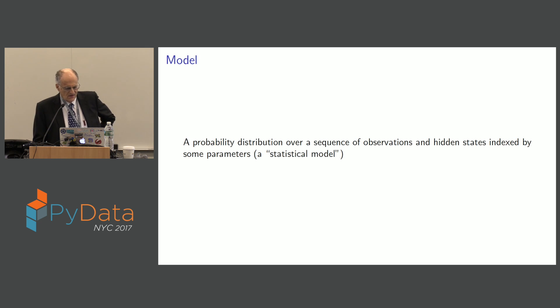So here's a model. Andrew Gelman uses the same. Bayesian uses the same. Probability distribution over sequence of observations, hidden states, indexed by some parameters. That's what I mean by a model. I could use a language stochastic process.